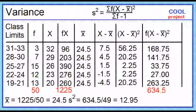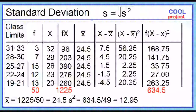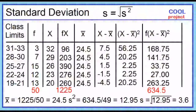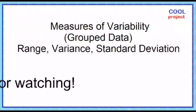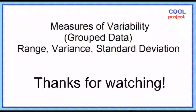The standard deviation is just the square root of the variance. The square root of 12.95 equals 3.6. The standard deviation is equal to 3.6. Thanks for watching.